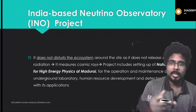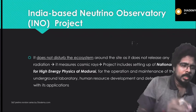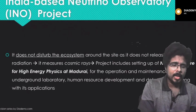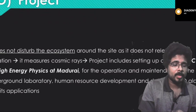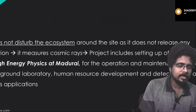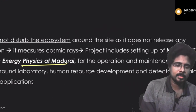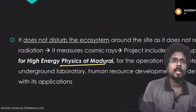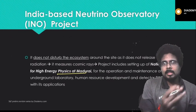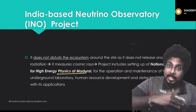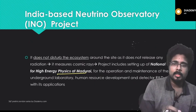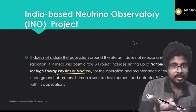The INO project does not disturb the ecosystem — it does not release any particles or radiation; it merely observes and studies them. It will measure cosmic rays and includes setting up a National Institute for High Energy Research at Madurai. The underground tunnel will not impact the ecosystem above it. It is located in the Eastern Ghats — not the Western Ghats — in Theni, Tamil Nadu.